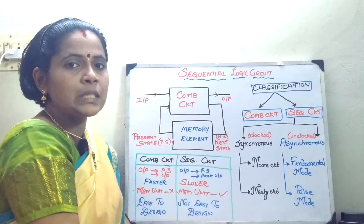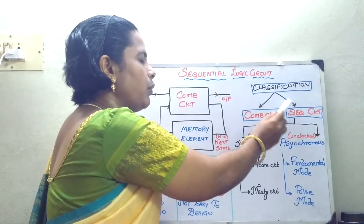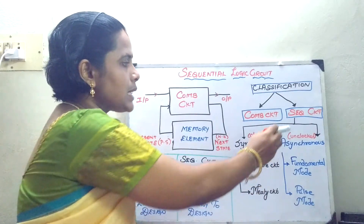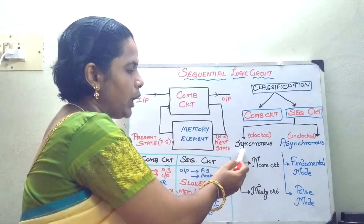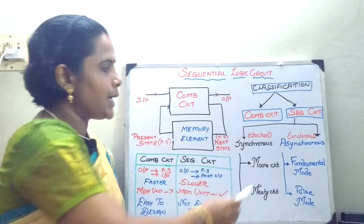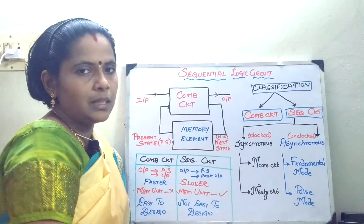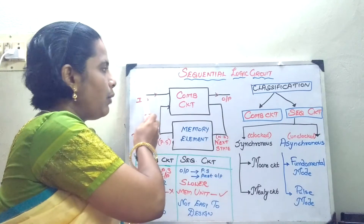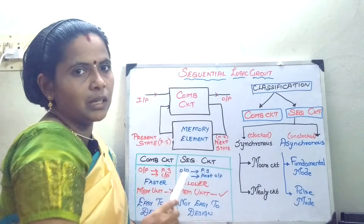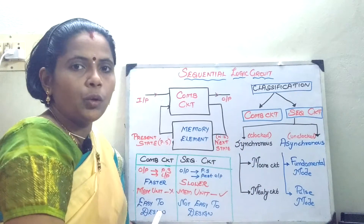Now we will move on to the classification of sequential logic circuits. Generally, a logic circuit divides into combinational circuit and sequential logic circuit. In a sequential logic circuit, you have two types: one is synchronous mode and another is asynchronous mode. In synchronous mode, the clock pulse is given everywhere — the output will change only based on the clock signal, only at discrete instants of time.